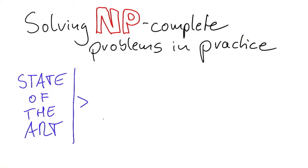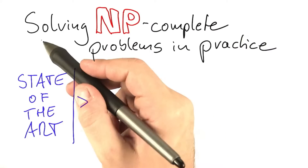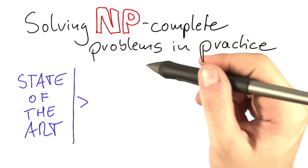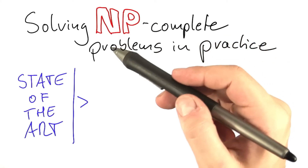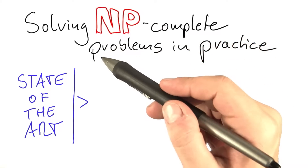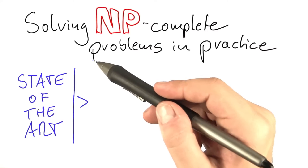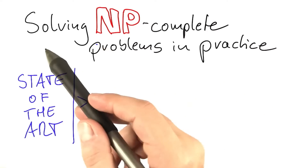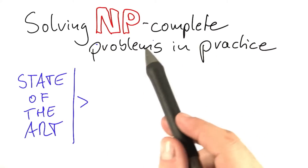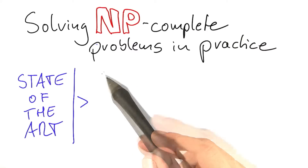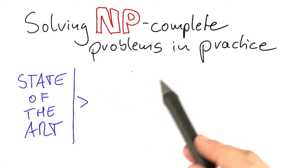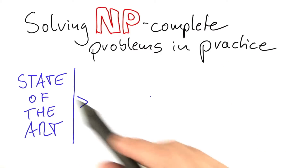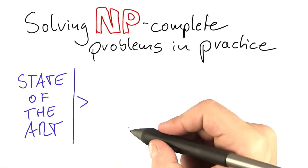Congratulations, you have now learned a lot about solving NP-complete problems in practice. You have learned about search tree optimization, pre-processing, and other techniques such as fixed parameter tractability. And this is huge. In this unit, I could only teach you the very basic techniques that are used. So you might be wondering: what is the state of the art for solving NP-complete problems in practice? I would like to give you a few examples and numbers.